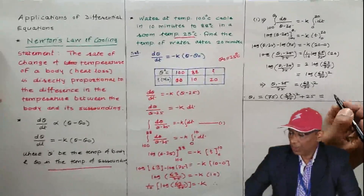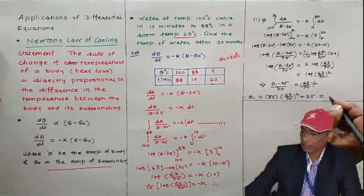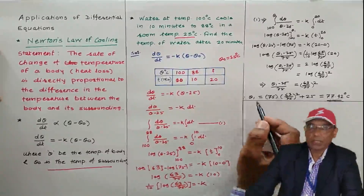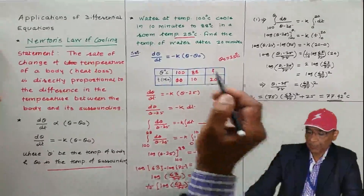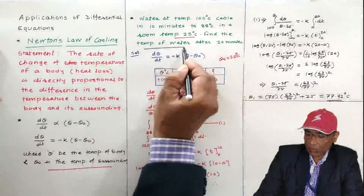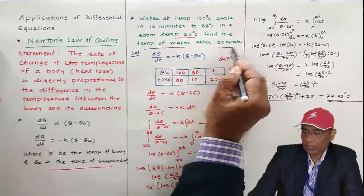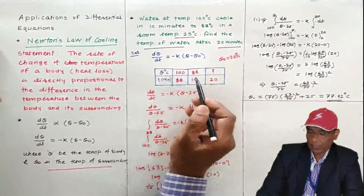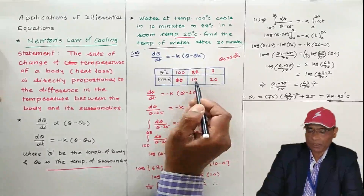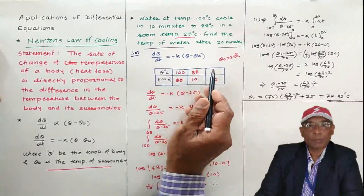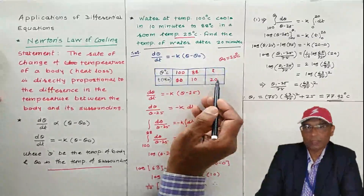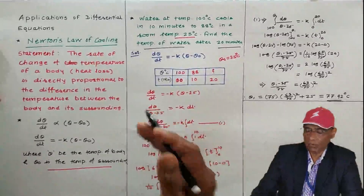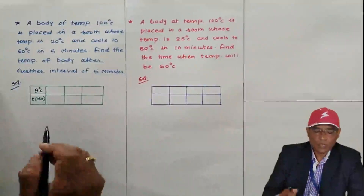The value of θ₁ is 77.92 degrees centigrade. This is the temperature of water after 20 minutes. The initial temperature of water was 100 degrees, it moved to 88 degrees in 10 minutes, and after 20 minutes the temperature is 77.92 degrees centigrade.